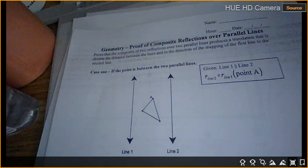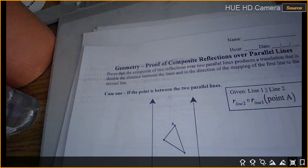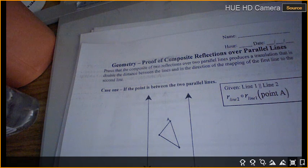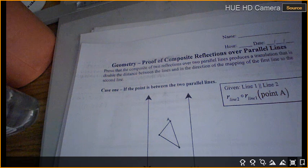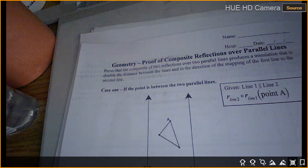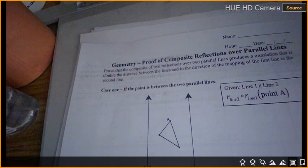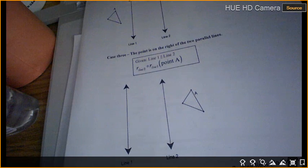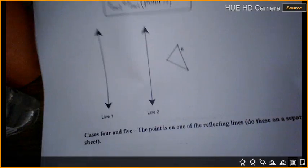So today, ladies and gentlemen, we are going to prove that when we reflect something over two parallel lines, it's twice the distance than the distance over the two lines. So I need you guys to now be quiet. You should have this out in front of you. We're going to go through this together. I'm just going to do case one. You guys are going to do case two, case three, and then case four and five. You need a separate sheet of paper to do.